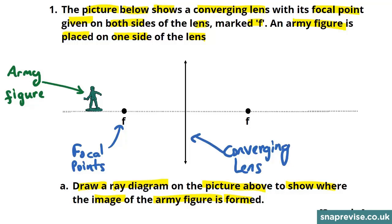We know that a ray drawn through the center of the lens will not change direction. So it's easy to draw a ray like this going through the center of the lens.